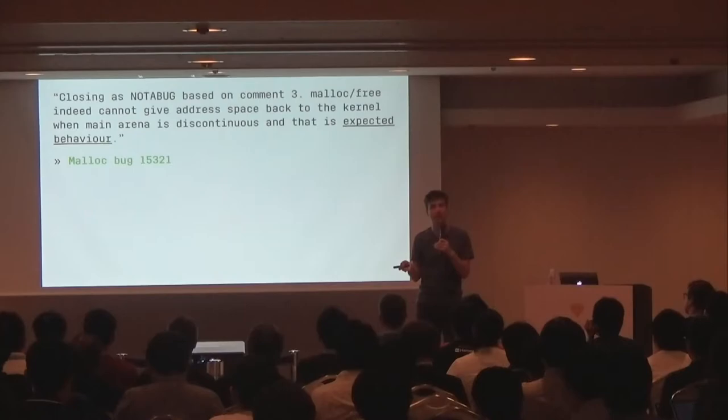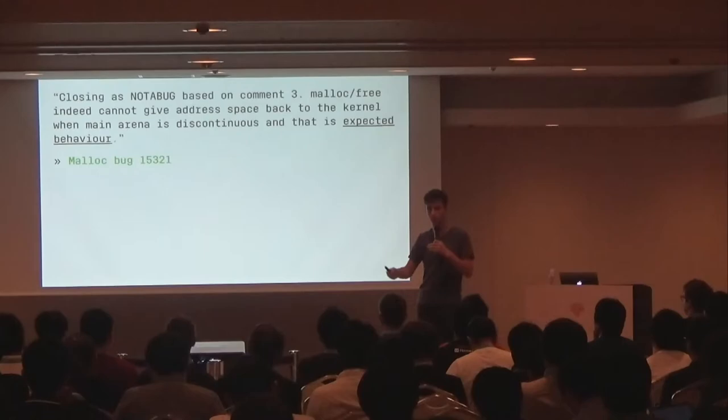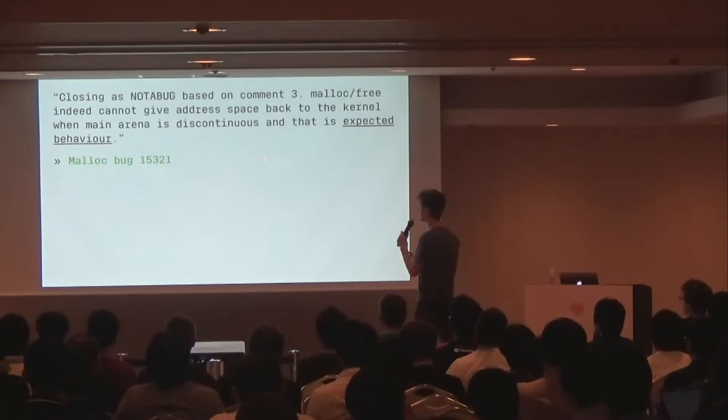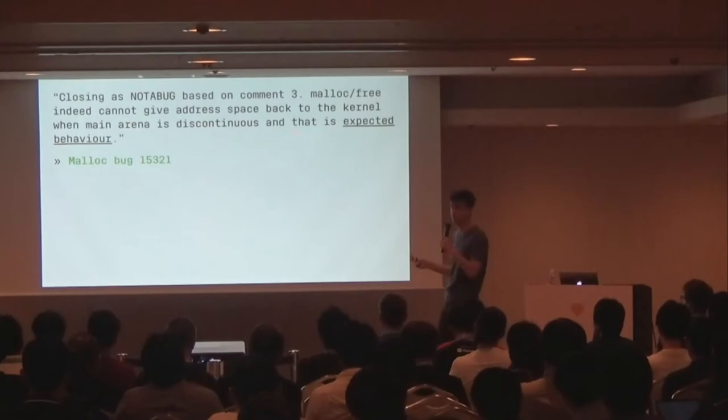So if you have one gigabyte of memory in your heap and there's a live memory location at the very end of the heap, we can't free anything. This is specific to malloc, which is why I bring it up, because this is what most people use. Other allocators deal with this differently, such as jemalloc. This often gets opened as a bug on the malloc tracker — people say they have a memory leak — but everything is still tracked. We cannot give address space back to the kernel when the main arena is discontinuous. That is expected behavior.